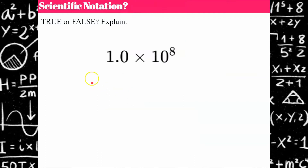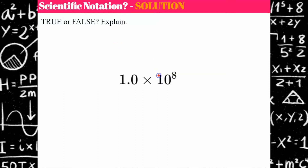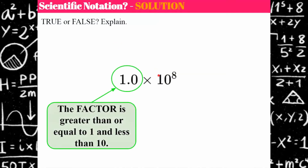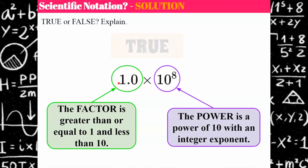Try another one. Is this number written in scientific notation? Go ahead and pause. Welcome back — I hope you chose true. The factor is one, which is equal to or greater than one, and we have a power with an integer exponent. So this is in scientific notation.